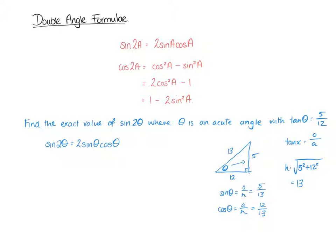So now that we've got those values, we can put those into our equation. We know sine theta is 5 over 13 and cos theta is 12 over 13. So 2 times 5 over 13 is 10 over 13, and then you times that by 12 over 13. When multiplying fractions you multiply the tops and multiply the bottoms: 10 times 12 is 120, and on the bottom 13 times 13 is 169. And that's our answer: 120 over 169.